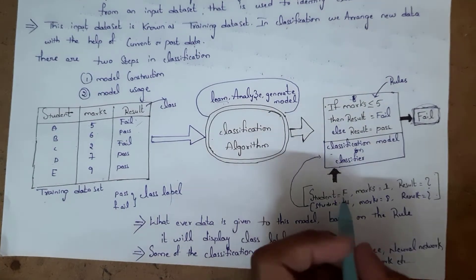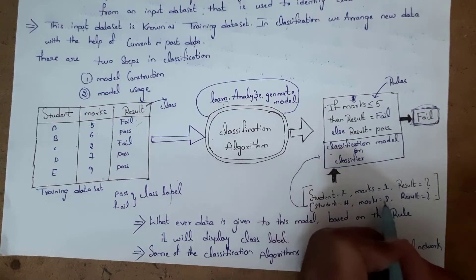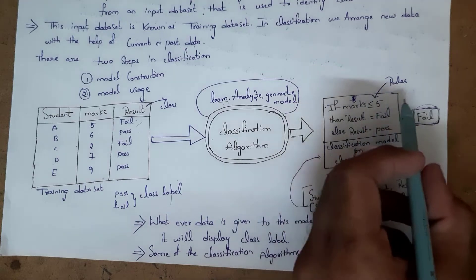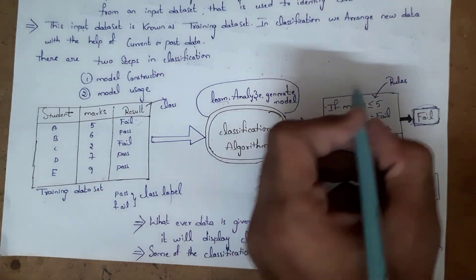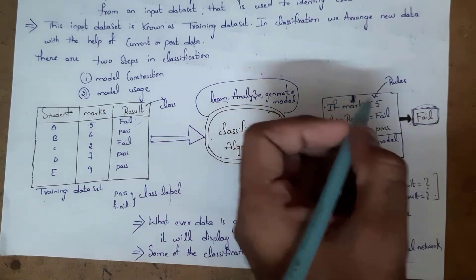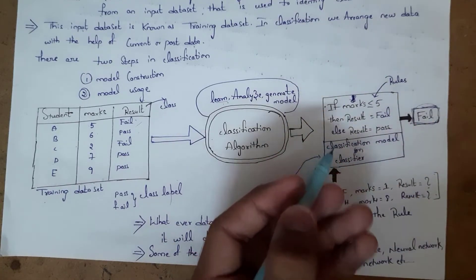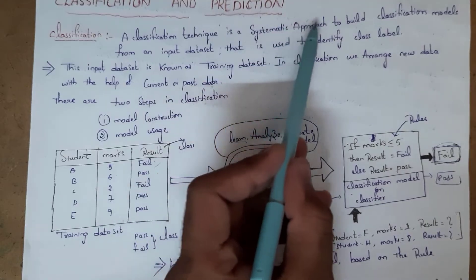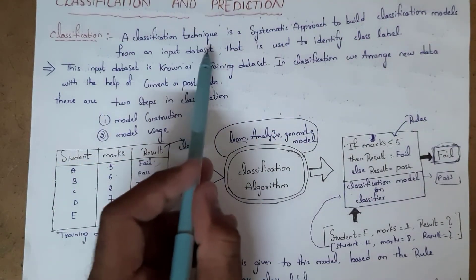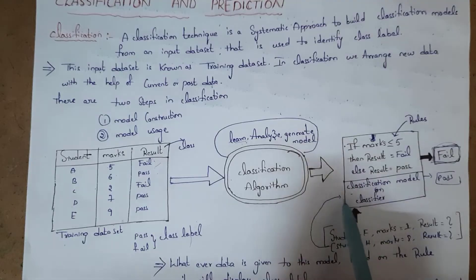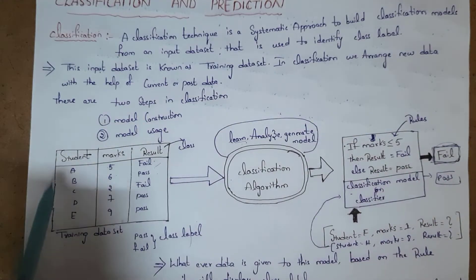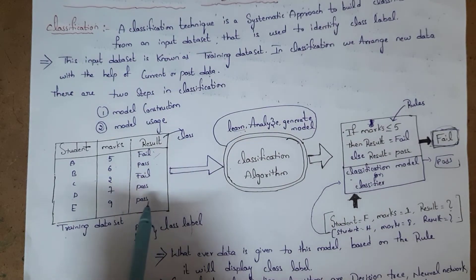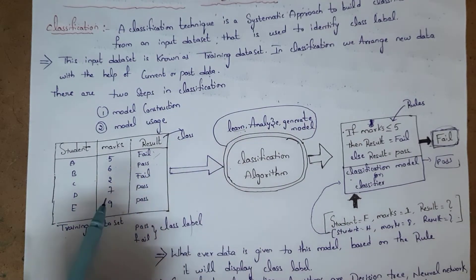For example, there is another student H who got 8 marks. When I send this information into the classifier, it checks: student got 8 marks, 8 is not less than or equal to 5, 8 is greater than 5, so the result is pass. Classification technique is a systematic approach to build a classification model from an input data set, used to identify class labels such as fail and pass.